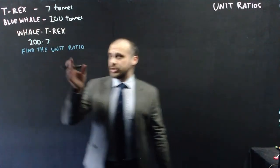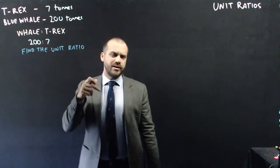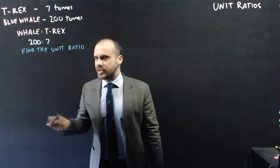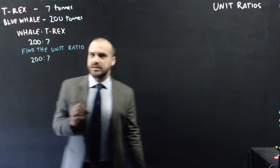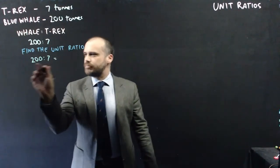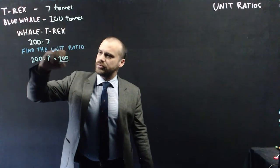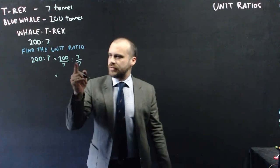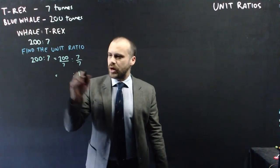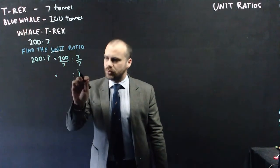Now to find a unit ratio, the way to do it is to turn one of these sides into the number 1 by dividing it by itself. So in this case, 200 is to 7. I'm going to divide both sides by 7. 200 divided by 7 is to 7 over 7. Now that gives me 7 over 7 on this side. That's 1. That's why it's called a unit ratio. Single unit. 1.